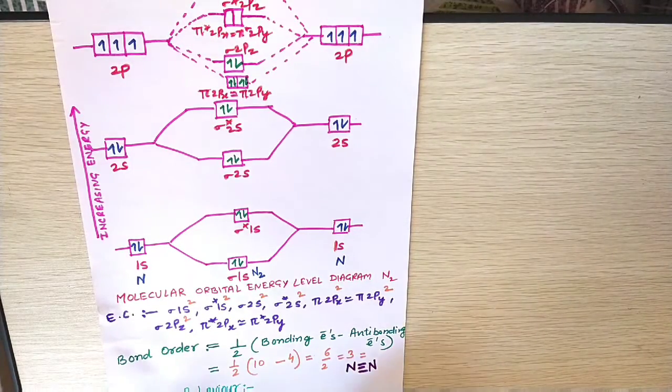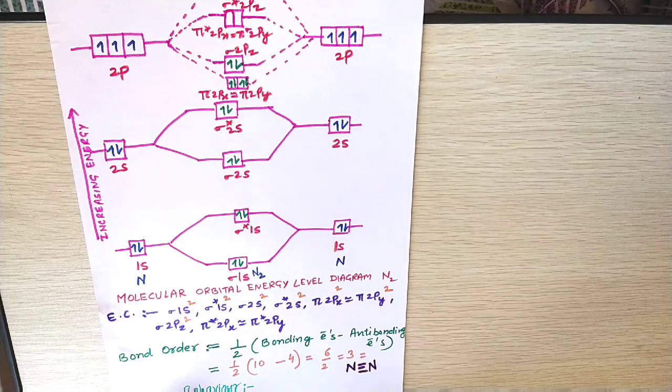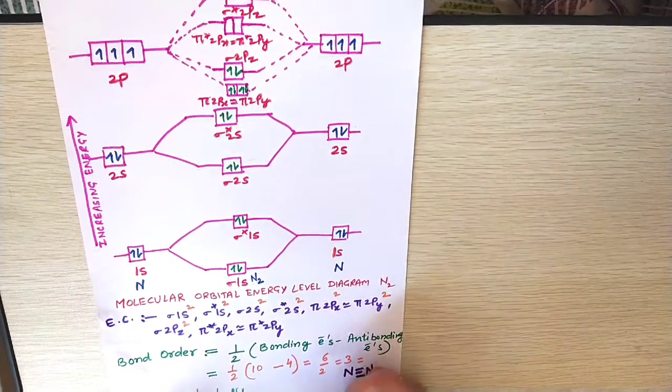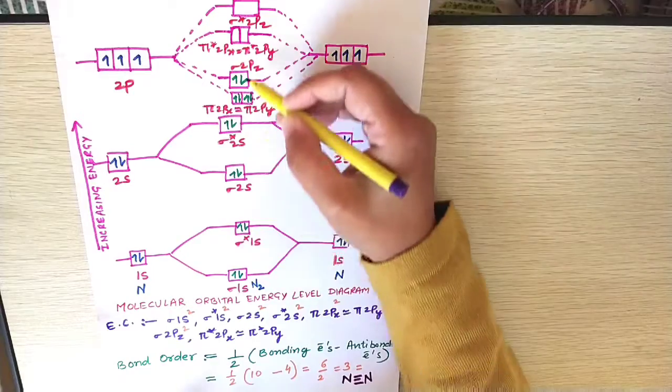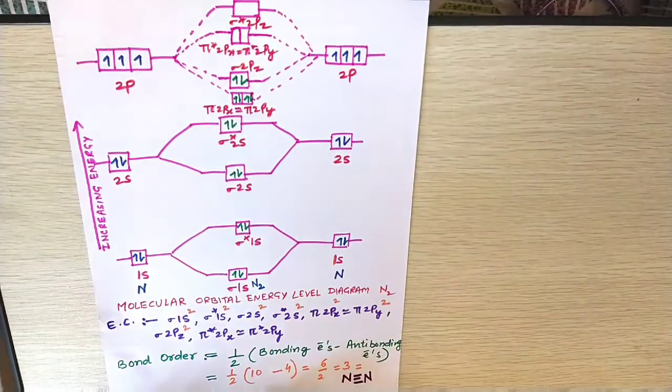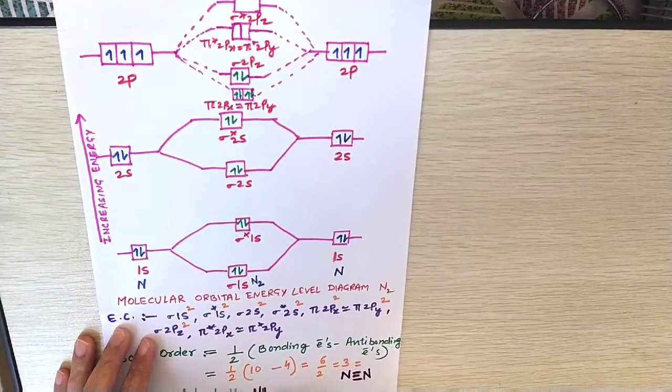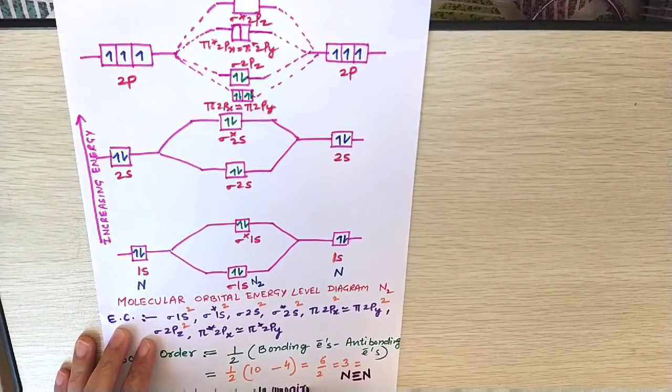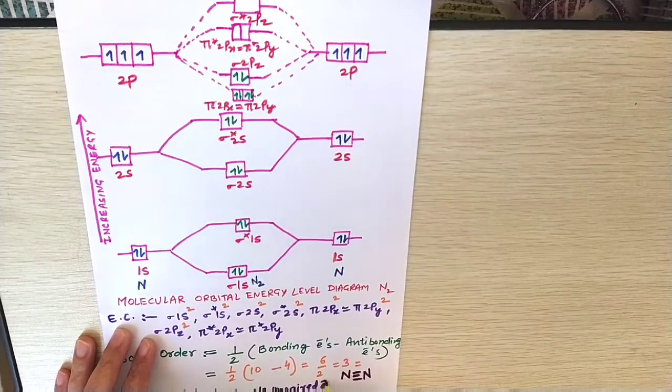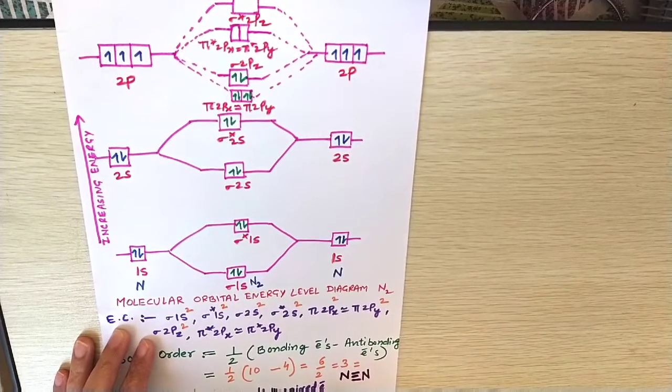Next is calculating the magnetic behavior. Here if there is any unpaired electron. No unpaired electron. So diamagnetic.